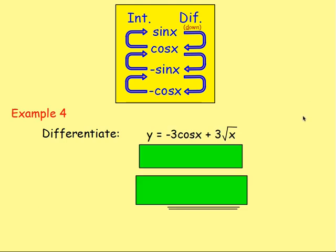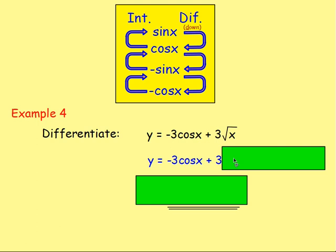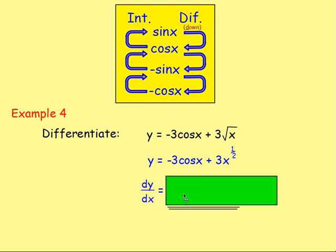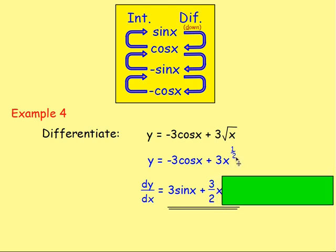Example four: Differentiate y = -3cos x + 3√x. First you need to rewrite the root — don't differentiate yet. Leave it as y equals and rewrite root x as x to the power of ½. So you'd have 3x^(1/2). Differentiating: dy/dx — we've got negative cos x, and differentiating negative cos goes back to positive sin, so we'd have positive 3sin x. Then differentiating 3x^(1/2), bring the power down: 3 times ½ is 3/2, and x to the power of ½ minus 1 is x^(-1/2).